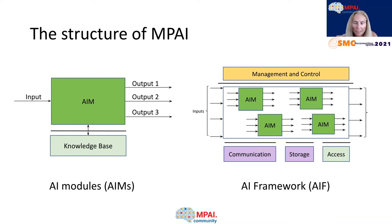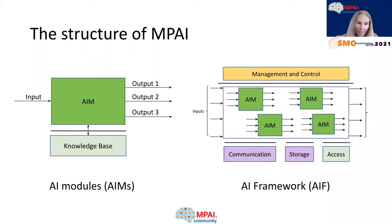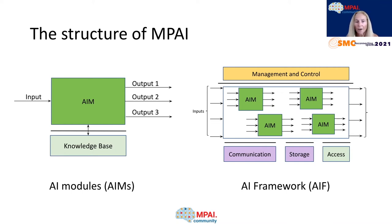The general structure consists of six main components: the management and control, which manages and controls the AIMs; the execution, which is the environment in which different combinations of AIMs operate; the AIMs themselves; a communication box, which is the basic infrastructure that allows connecting possibly remote components, AIMs and storage; and finally, access to static or slowly changing data.